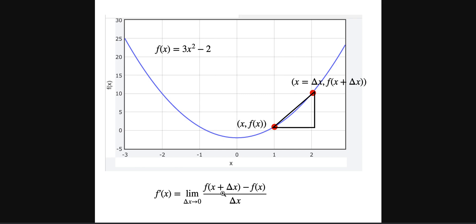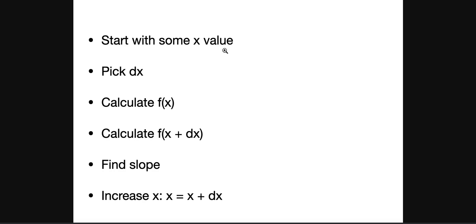The normal derivative says take the limit as delta x goes to zero, and that's how you get this. I did a video on that - I'll include the link below. Here's how we're going to do this in Python: start with some value x, like x equals negative 3, pick a step size dx - I'll start with 0.1. Calculate f of x, calculate f of x plus delta x, then use the slope formula to find the slope between those two points and use that as my derivative.